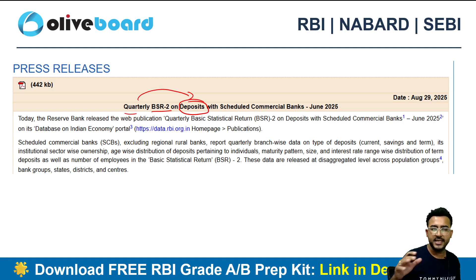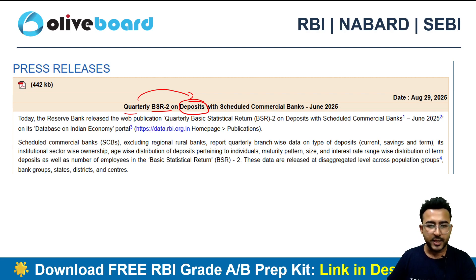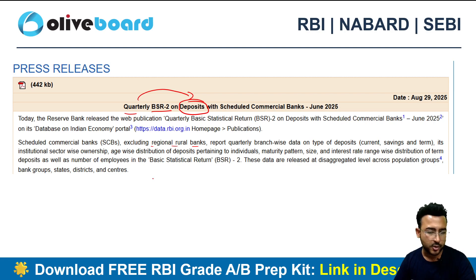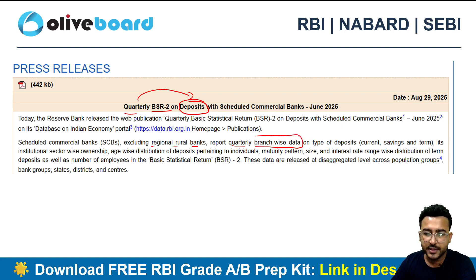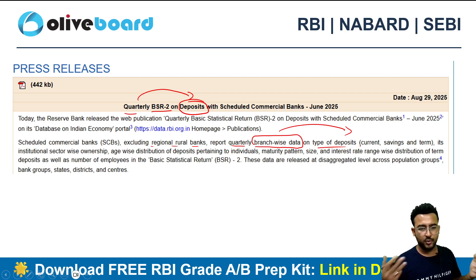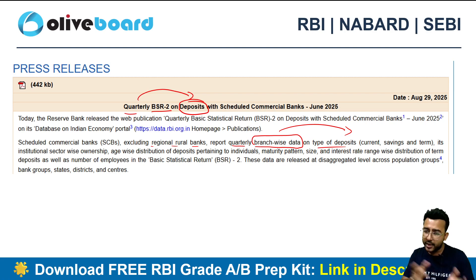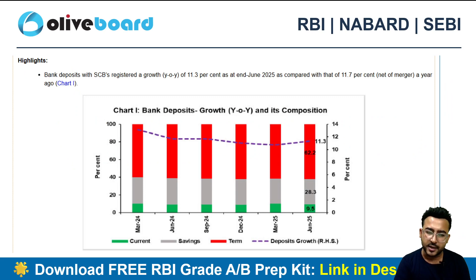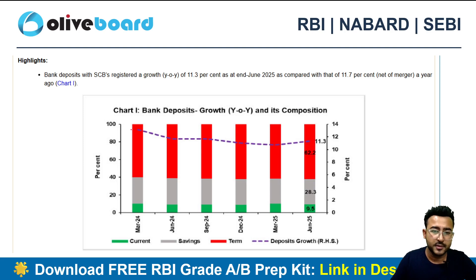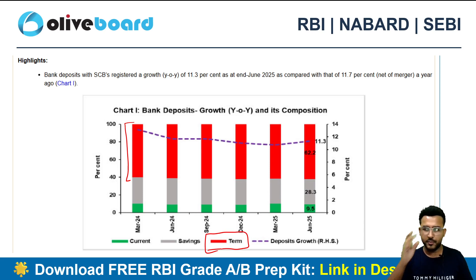Moving to BSR 2, which is the quarterly report on deposits with scheduled commercial banks — note that both BSR 1 and BSR 2 exclude regional rural banks (RRBs). This report covers branch-wise data on deposits, depicting ownership, age-wise distribution, maturity patterns, and size of deposits. Types of deposits include current account, savings account, and term deposits. Term deposits account for the majority share in total deposit composition.